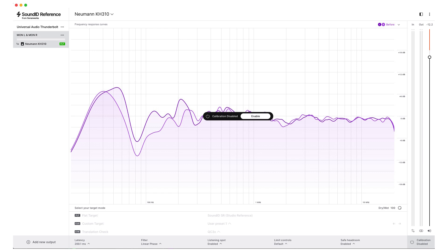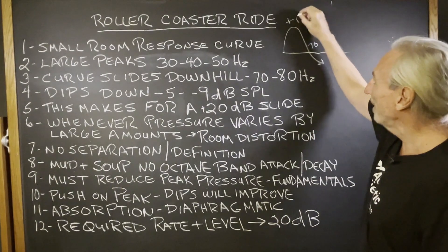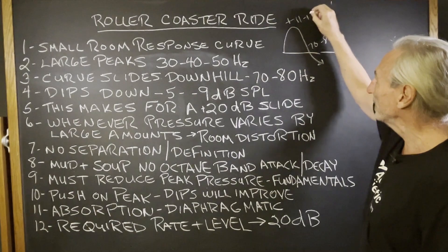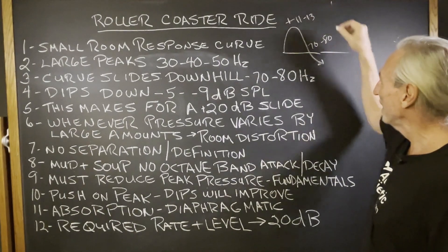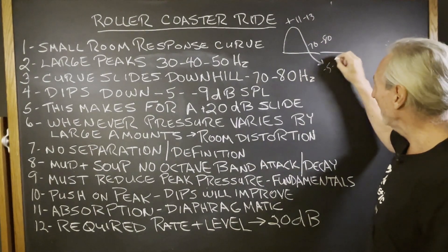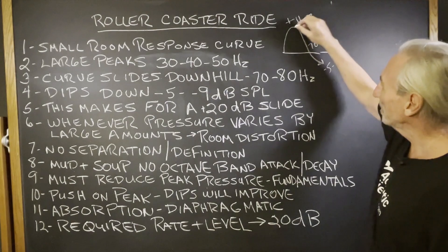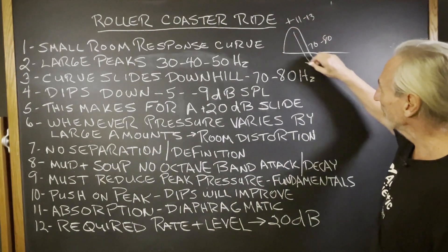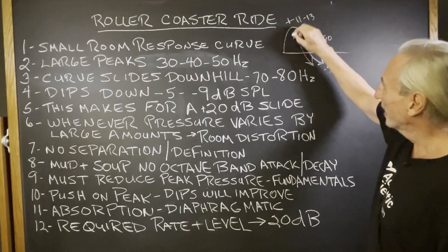We get these big peaks, and then around 70 to 80 it slides down below baseline. So we get plus 11, plus 13 here, and then we can get minus 5, minus 9 here. This is the rollercoaster.